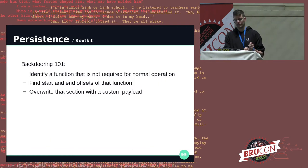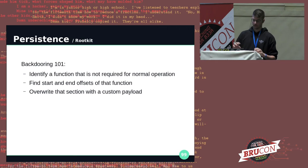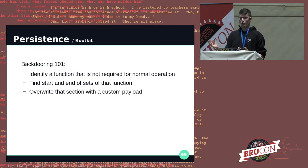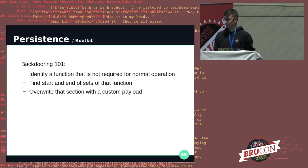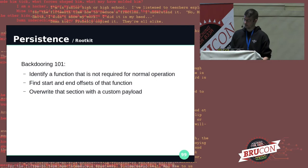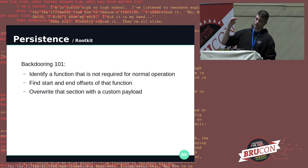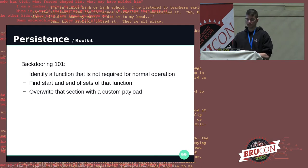The idea to create an implant is to identify a function that is not required for normal operation — one that is called on boot and launches a thread that isn't necessary for the device's normal operation. In my case, I'm using an IPsec handler because it's part of the Broadcom packages but not used by those ISP devices. You find that function, find the start and end of its code section, create a shellcode, overwrite that segment within your firmware, repack it into a program store file, and you have your implant saved.